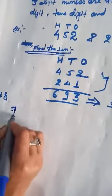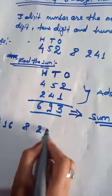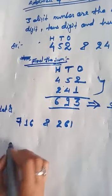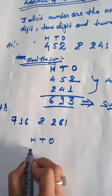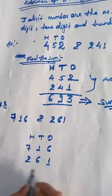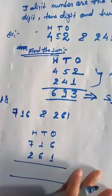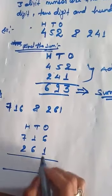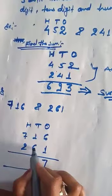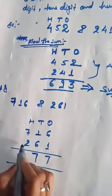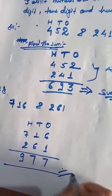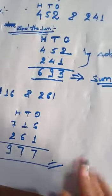Next example: 716 and 261. We write the places the same way. Add the ones place: 6 and 1 is 7. Then the tens place: 1 and 6 is 7. Then the hundreds place: 7 and 2 is 9. The sum is nine hundred seventy-seven.